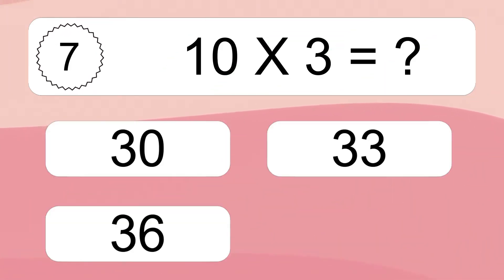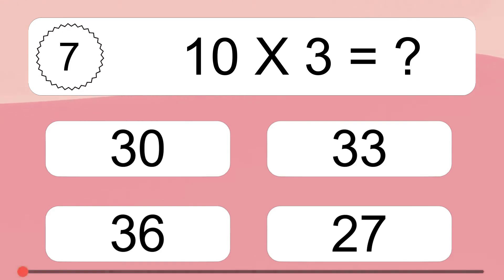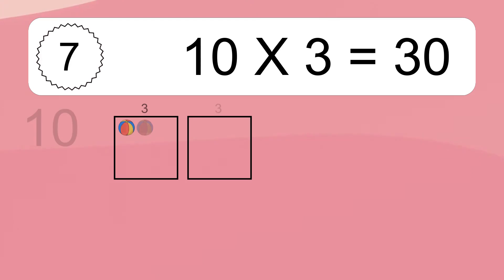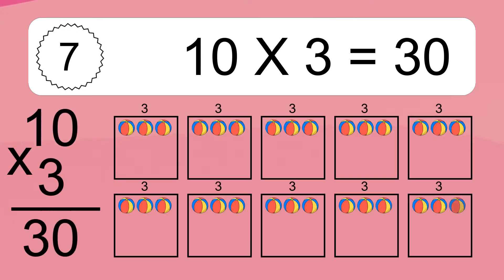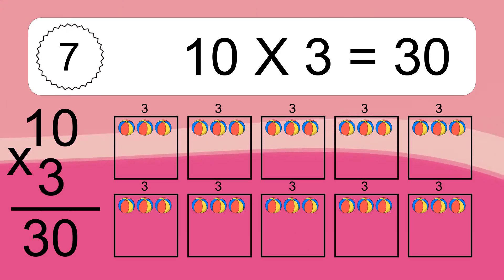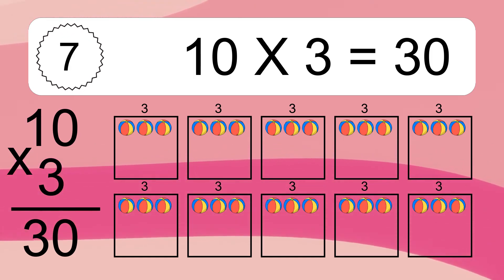Ten times three equals what? Ten times three equals thirty. We have ten boxes, and each box has three colorful balls inside. If you count all the balls in all the boxes together, you will have ten times three balls. This equals thirty balls.